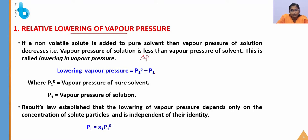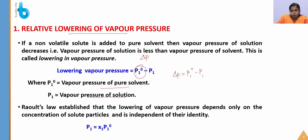Here P₁⁰ is the vapor pressure of the pure solvent and P₁ is the vapor pressure of the solution. Raoult's law establishes that the lowering of vapor pressure depends only on the concentration of solute particles — the number of moles added — and is independent of the identity of the solute. According to Raoult's law: P₁ = x₁ · P₁⁰, where x₁ is the mole fraction of the solvent.